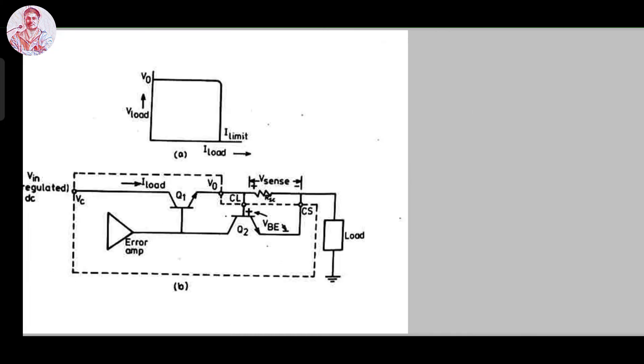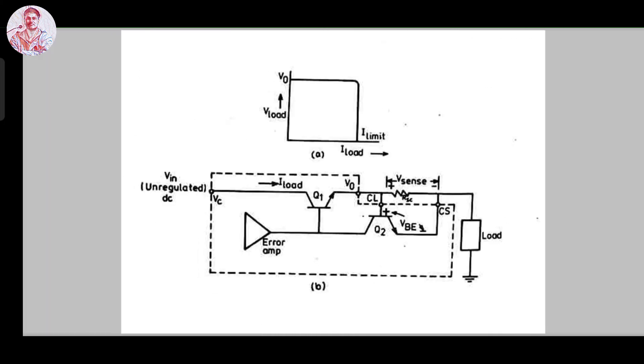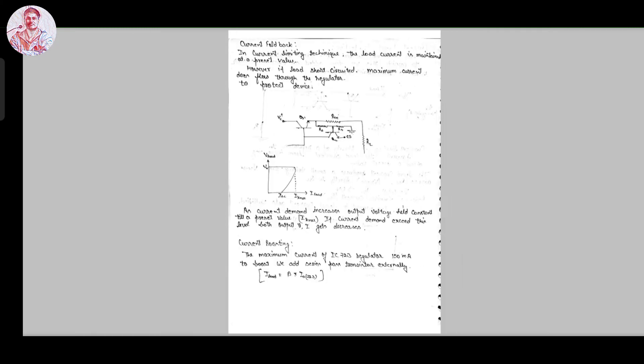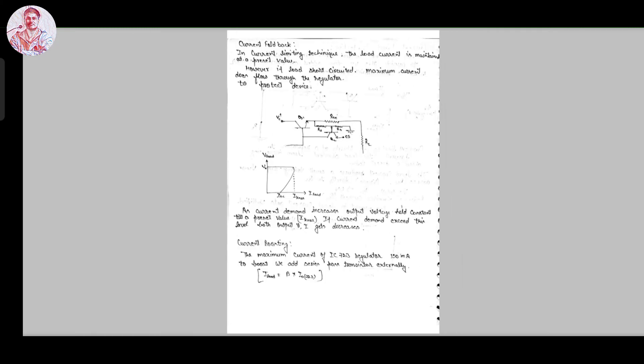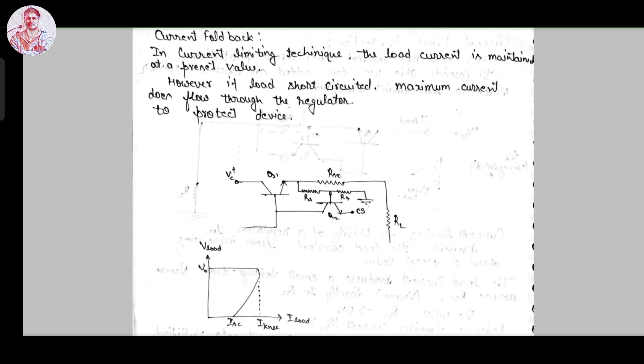At the overloading condition, V0 turns to zero and I is set to a limit. This is the current limiting technique. But in the concept of foldback network, when the load is short circuited, the maximum current does flow over to the regulator. To protect the device, we must add changes in the circuit.